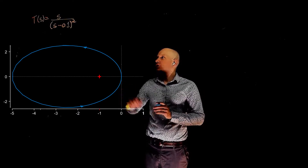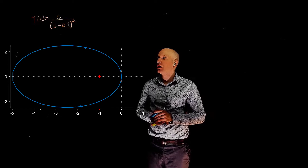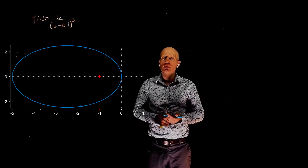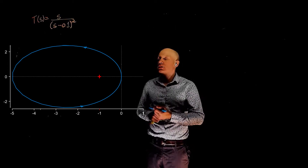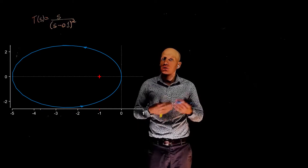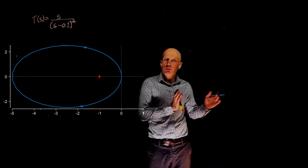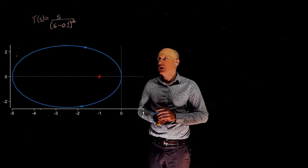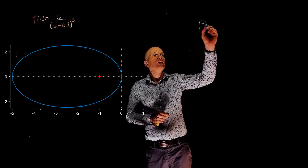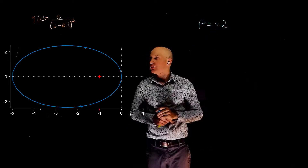This function is S over (S minus 0.1) squared. The poles are at S equal to plus 0.1, and because this is squared, we have two unstable poles — two poles on the right side of the S-plane. So for this function, P equals 2.